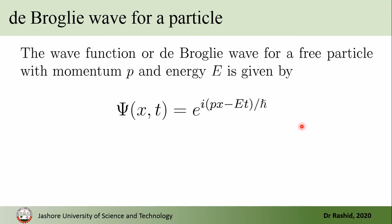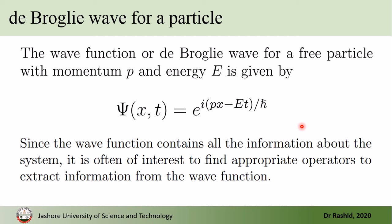The wave function contains all the information about the system. So if we like to extract particular information, we need an appropriate operator. For example, if we like to get the momentum p, we see that the operator we need will have a partial derivative multiplied by some number.